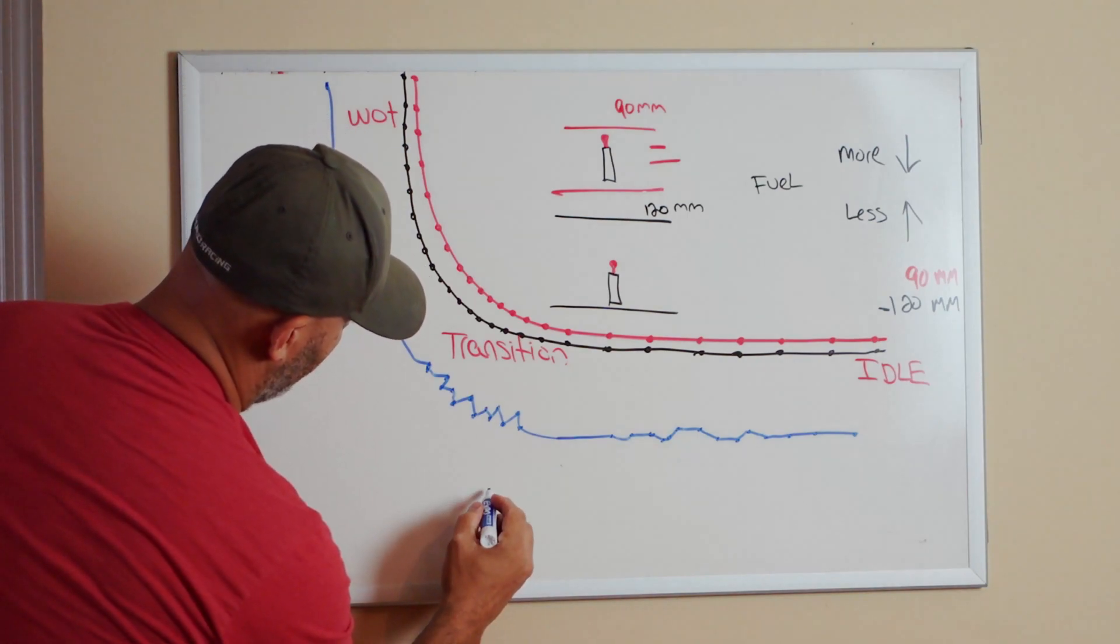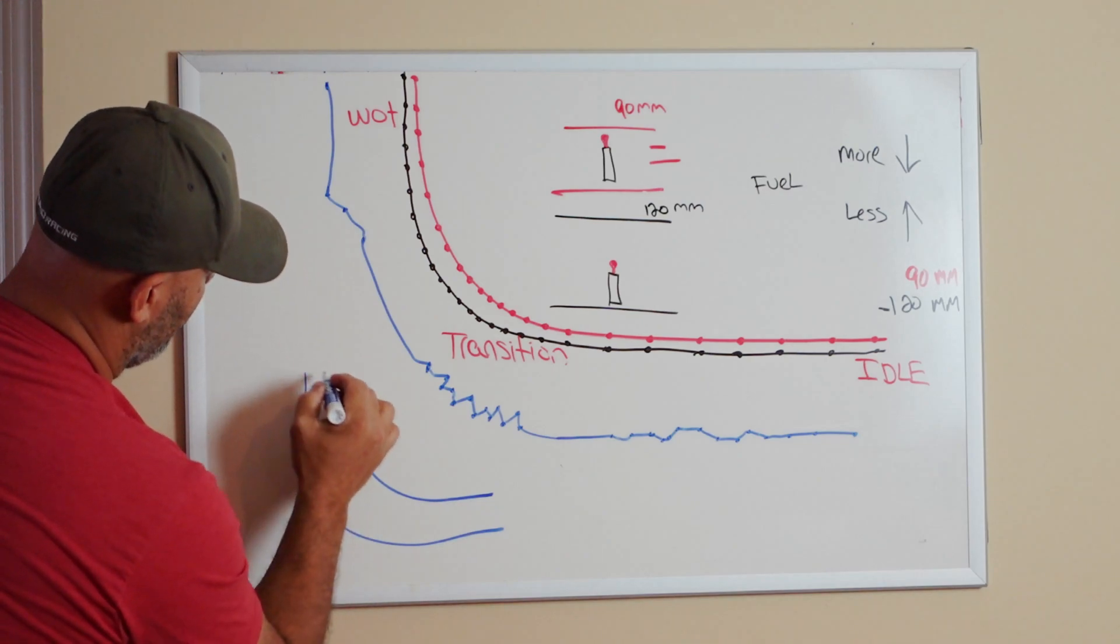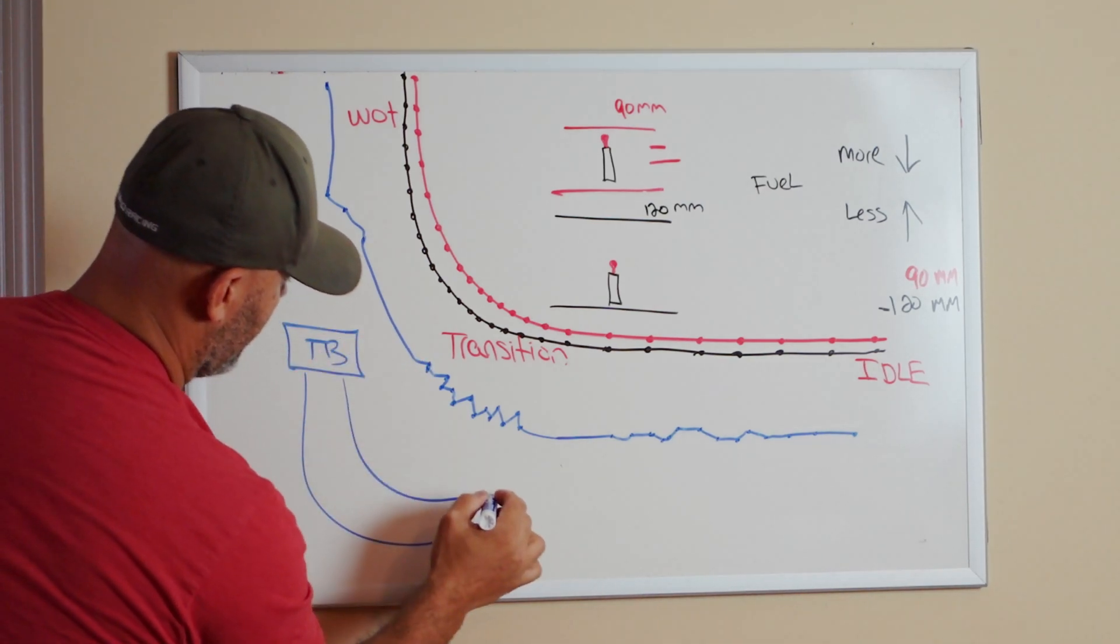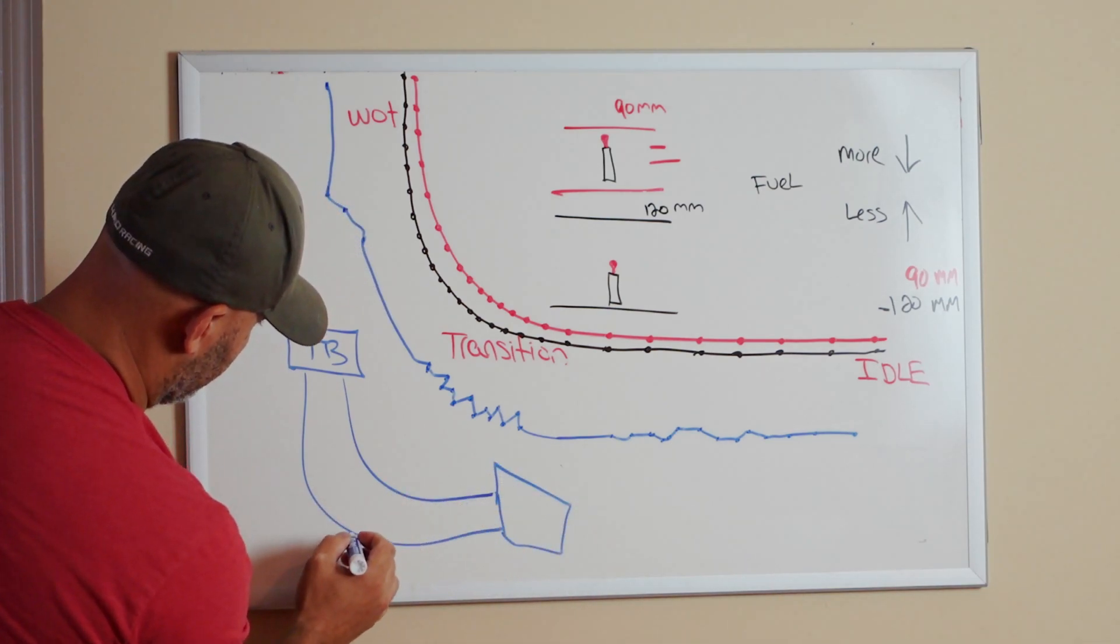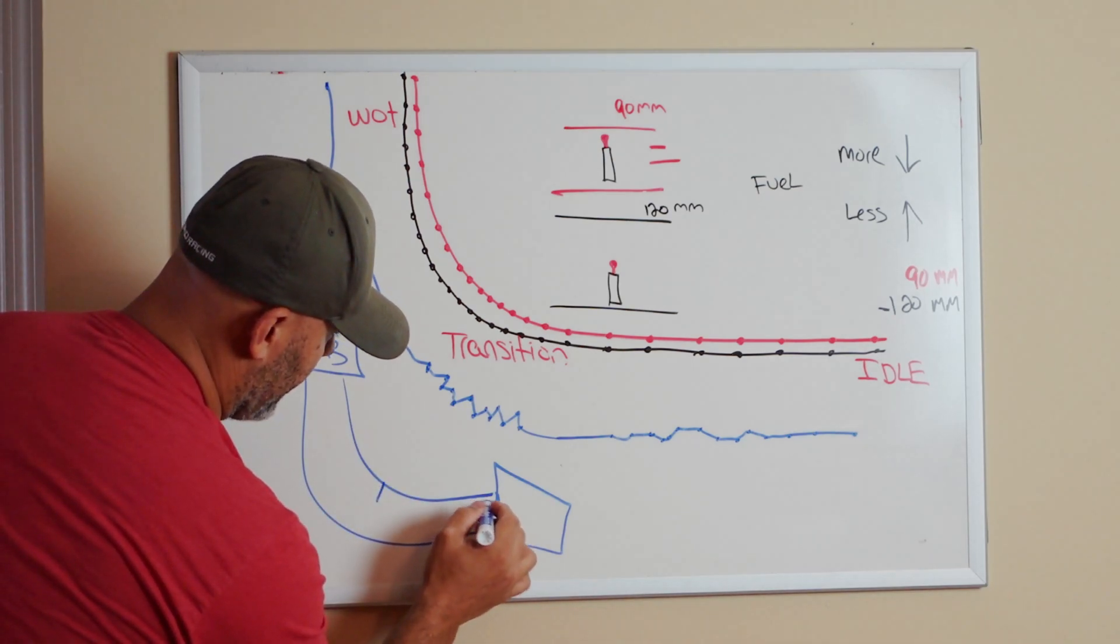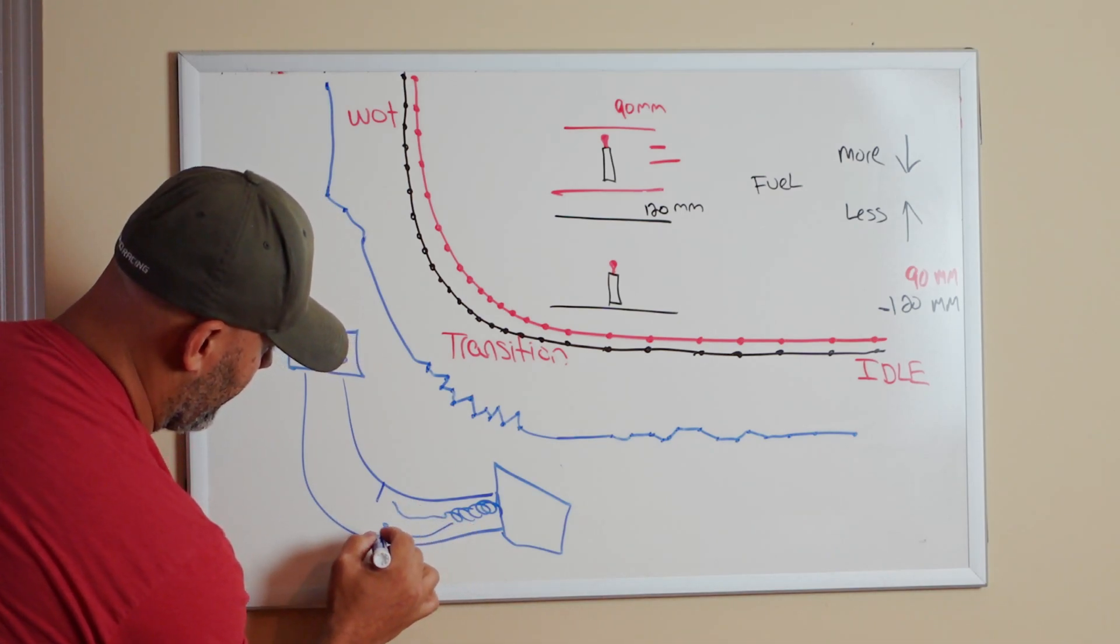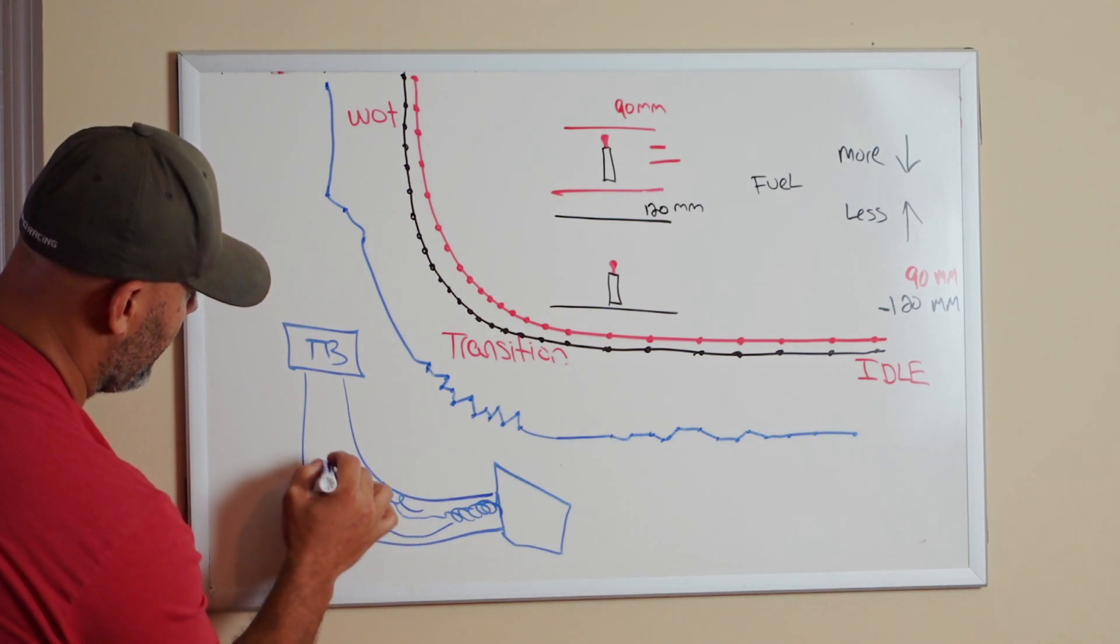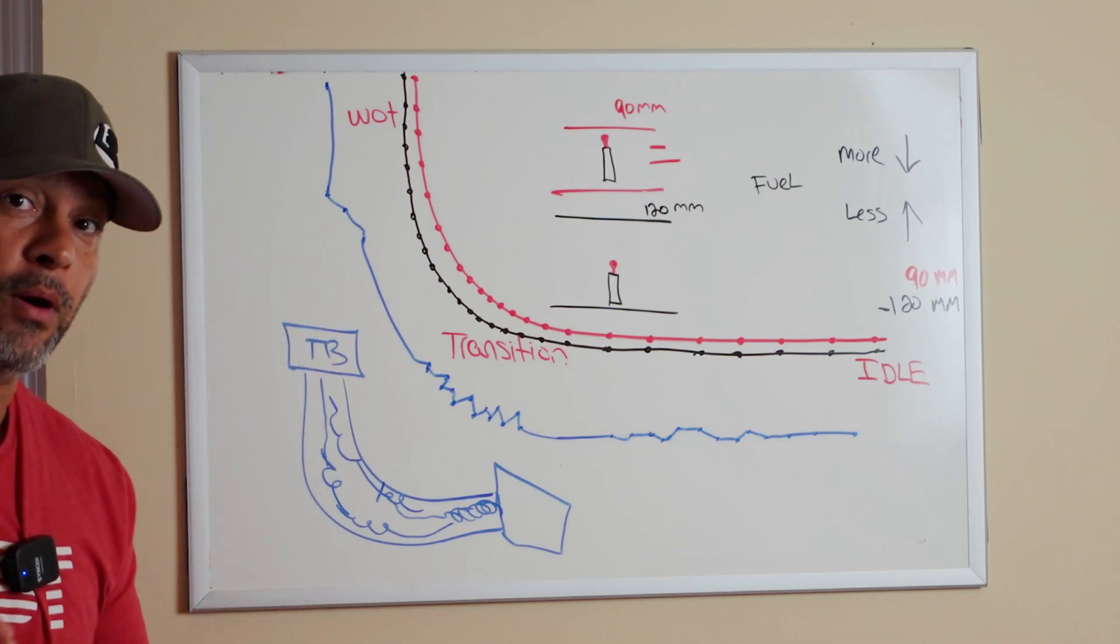If you have a pipe that is going like this into the throttle body—this is the throttle body and this is the filter—and you have the mass airflow sensor here, well this turbulent air is going to eventually smooth out, but then by the time it takes a turn it creates turbulence here and here before it has a chance to straighten out.